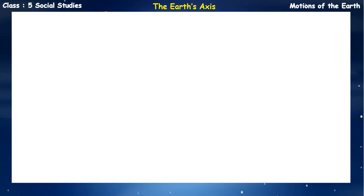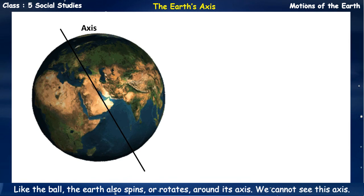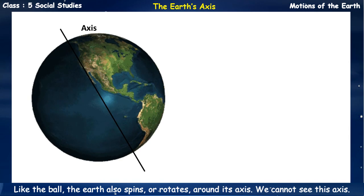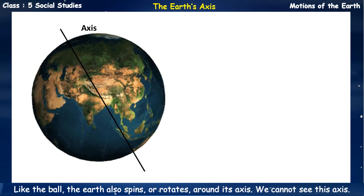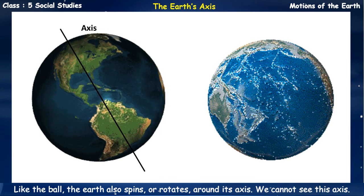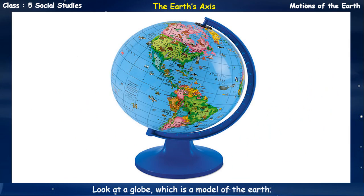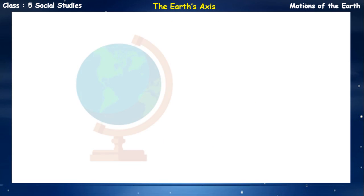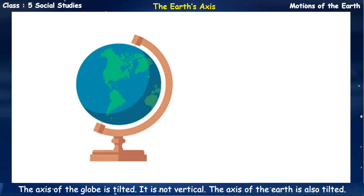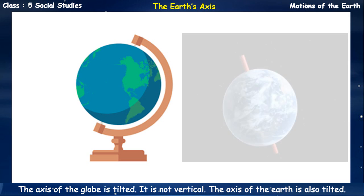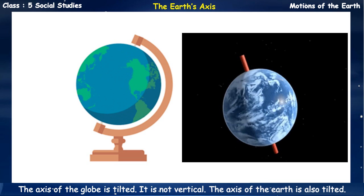The Earth's axis: like the ball, the Earth also spins or rotates around its axis. We cannot see this axis. Look at a globe, which is a model of the Earth – it will help you understand some more things about the Earth. The axis of the globe is tilted, meaning slanting; it is not vertical. The axis of the Earth is also tilted in the same way.